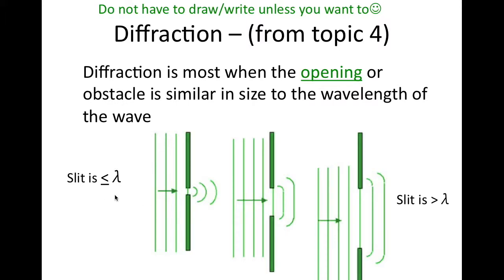As the slit is increased, we see less bending of the waves. In particular, when the slit is less than or equal to that of the wavelength, we see the most prominent amount of bending of the waves. And as the aperture becomes greater than the wavelength, then we see less bending.